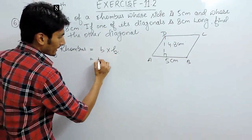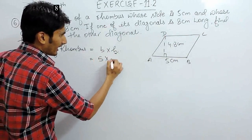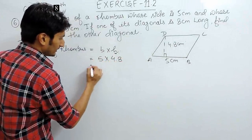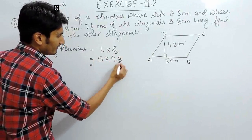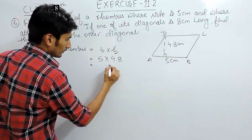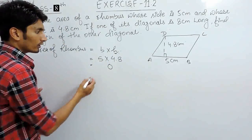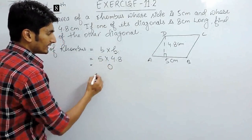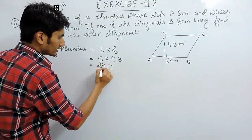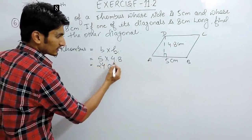We can simply multiply this. Base is 5, height is 4.8. Multiplying this, 5 into 4. There is 40 carry 4. 5 into 4 is 20 and carry 4 which is 24.